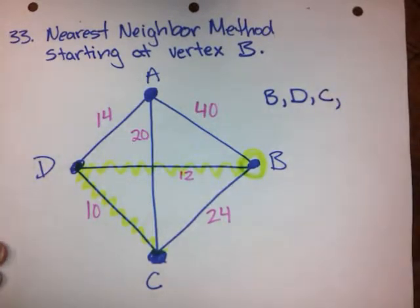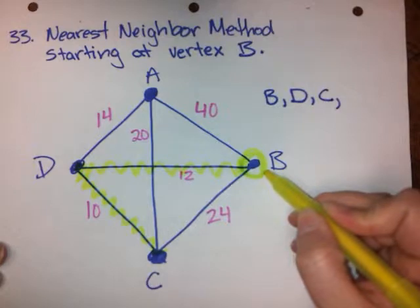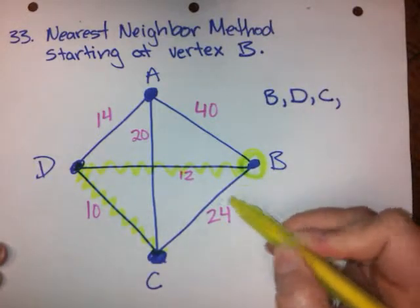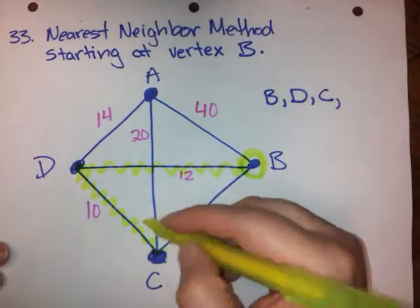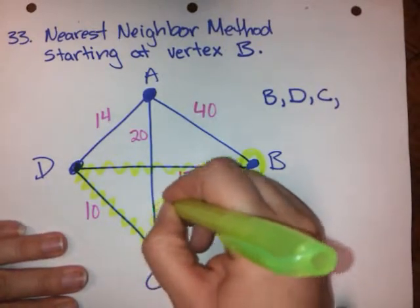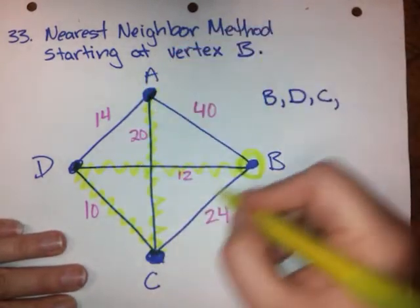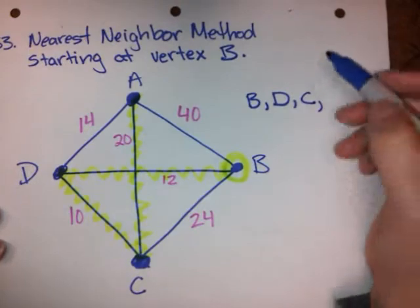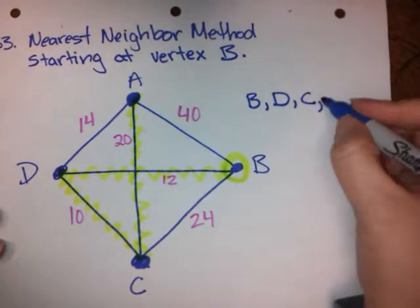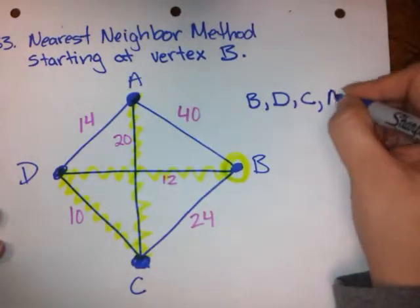All right, now I need to take whatever valid choices I have left to make a circuit. I can't go from C to B because it won't be a Hamilton circuit anymore. I will have missed A entirely. So I kind of really don't have a whole lot of choices here. I have to go to A. That's the only choice that I have. If I went to B, it wouldn't be a Hamilton circuit anymore. So B to D, D to C, C to A.